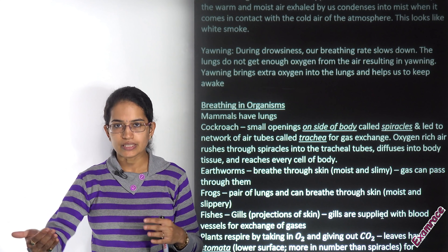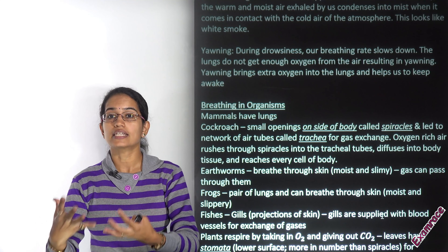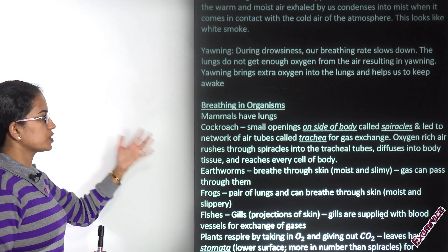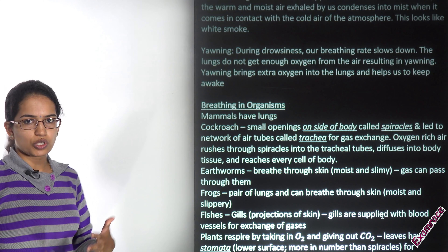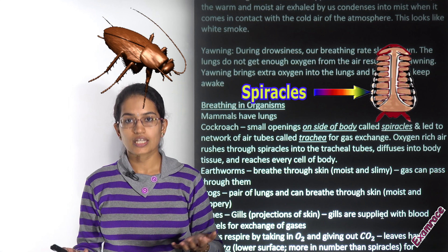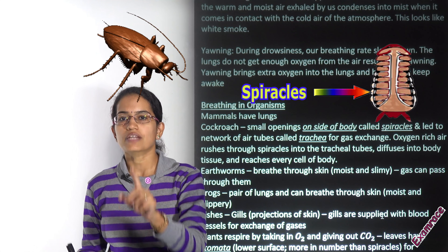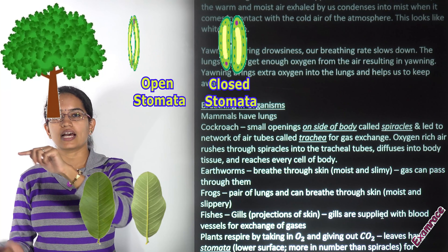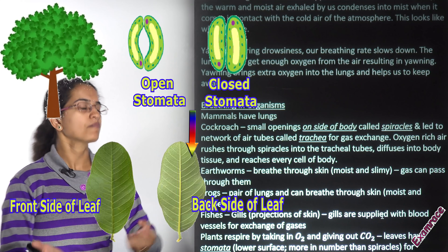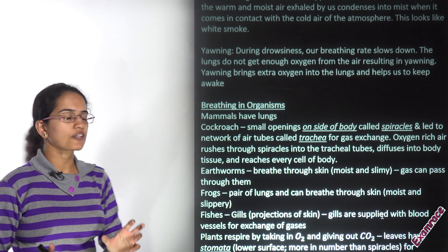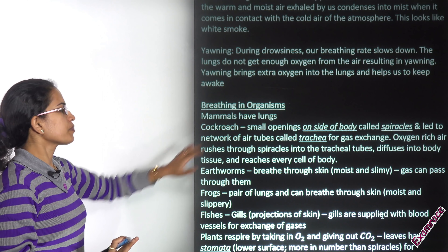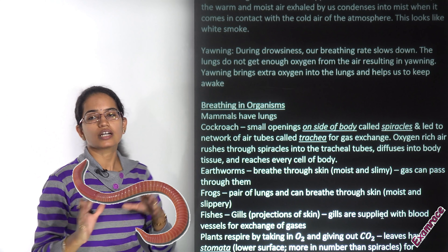Higher organisms such as mammals have lungs for breathing — whales, for example, are mammals with lungs. Fish, on the other hand, have gills. Different organisms have different breathing mechanisms. Cockroaches have spiracles located on the sides of their body. Plants have stomata located on the lower side of leaves. Through the spiracles, a network of trachea or air tubules allows oxygen-rich air in and carbon dioxide-rich air out.